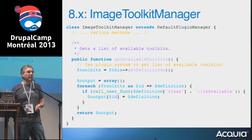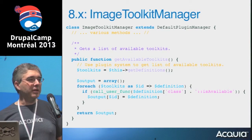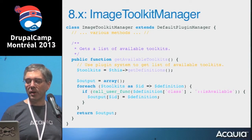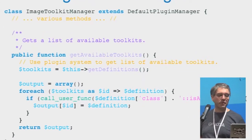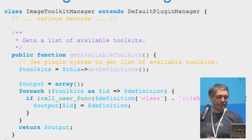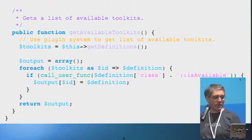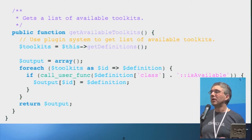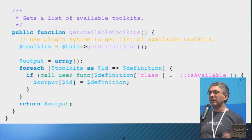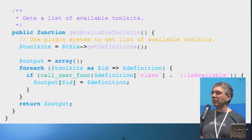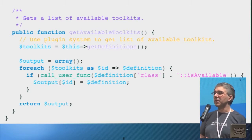In Drupal 8, the equivalent of the info hook is called plugin discovery, which is generally run through the manager. The manager has a method that finds all the plugins. Instead of calling hook_image_toolkits, you ask the manager for the available toolkits — very parallel. Similarly, every plugin provides a method to say 'am I actually available?' GD might be present as PHP code but not compiled into the PHP binary; image Magick might have the PHP integration code but not the binary on your system. So the plugin may exist but not be available.